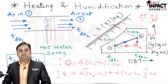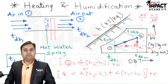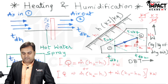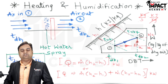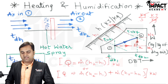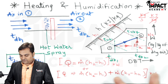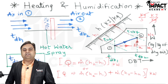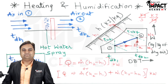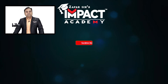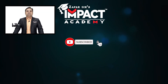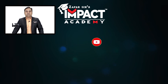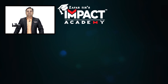This process — heating and humidification — is used in winter air conditioners where we want to increase the temperature of air, and since winter air is dry, we also need to humidify it. That was an explanation of heating and humidification on the psychrometric chart. If you find the videos helpful, please like, share, comment, and subscribe to the channel.